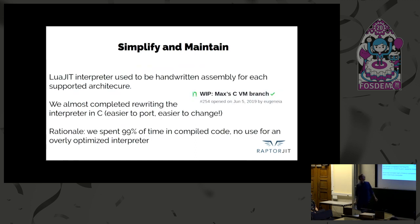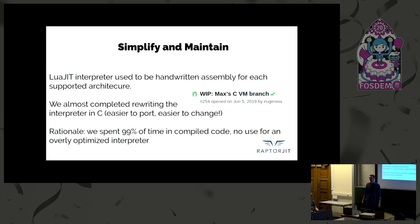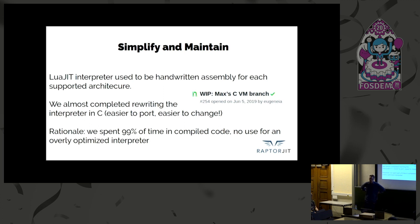The LuaJIT interpreter used to be handwritten assembly, duplicated for each specific architecture. We have almost completed rewriting that virtual machine interpreter in C, and we hope that will make it easier to port and change the language implementation. The rationale is that we spend most of our runtime in compiled code — meaning in compiled traces. For our use cases like high-performance networking, spending any significant time in interpreted code is out of the question anyway because that would be way too slow. So for us, an interpreter that's fast doesn't really do anything — we don't need a heavily optimized interpreter. Our idea is to make it easier to maintain and skip the optimizations we don't benefit from.